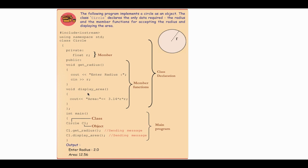The second function is DisplayArea. In this function, we calculate and display the area of the circle. We output: Area = 3.14 * r * r. So the DisplayArea function calculates and displays the area using the formula 3.14 times r squared.